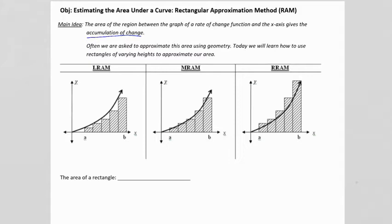Often we're asked to approximate this area using geometry. Today we will learn how to use rectangles of varying heights to approximate our area. It's important to realize that today we're just approximating the area, and since we're using rectangles for our rectangular approximation method, we're going to focus on the formula: area of a rectangle is base times height.